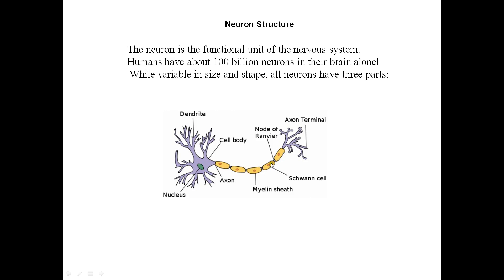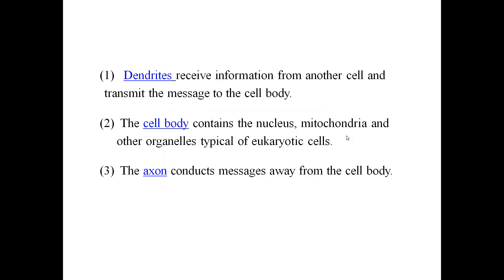The third part is the axon, which is an extension from the cell body. This is where your action potential, or nerve impulse, is transmitted. It travels to your axon terminals, sometimes referred to as end brushes. There's a small gap called a synapse, and it's the crossing of this synapse where the impulse travels from the motor neuron to your effector — your muscle or gland.